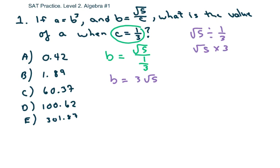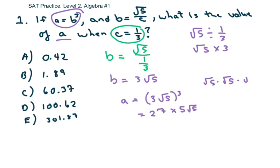And so what are we solving for A? So you just plug in B back into this equation. So you get A equals 3 square root of 5 cubed, which equals 27 times 5 square root of 5. Remember, square root of 5 times square root of 5 times square root of 5. So these two equal 5. Then you have that, and then you plug it in the calculator, and you get approximately 301.87. So the answer is E.